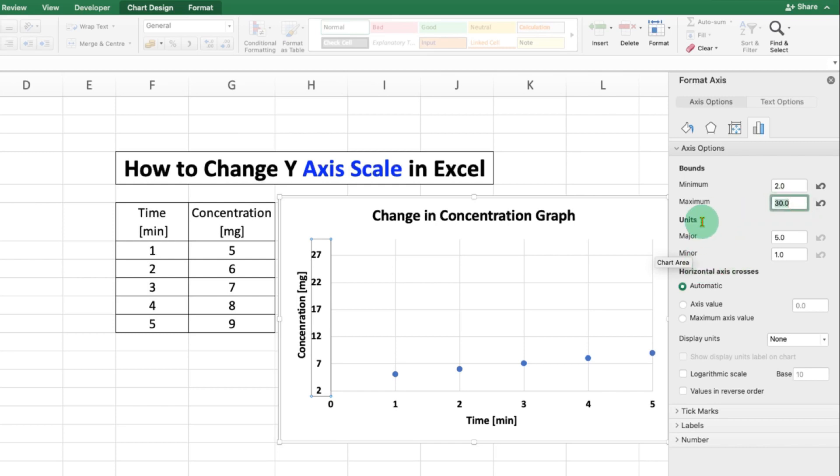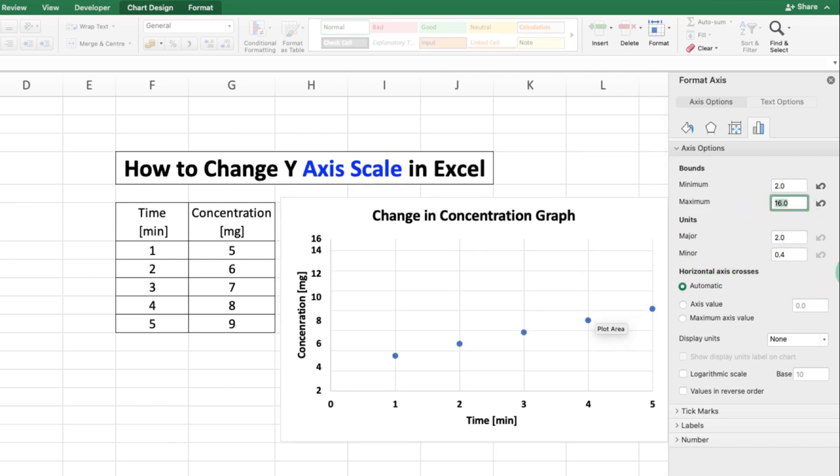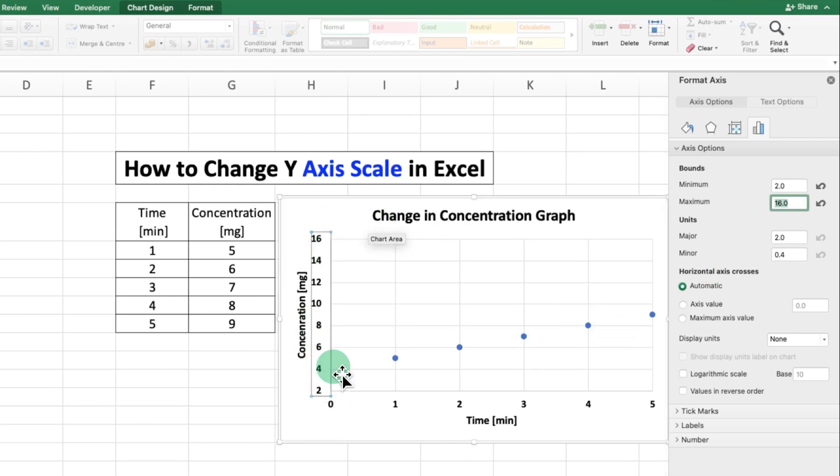If I enter 15 or 16 instead of 30, you can see the scale of the y-axis maximum has changed. Now, as you can see here, the difference is 2, for example: 2, 4, 6, 8.